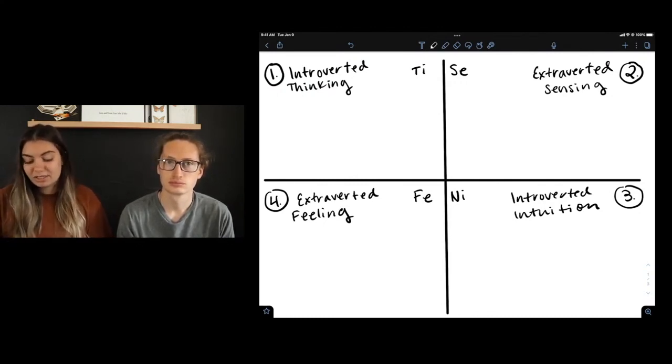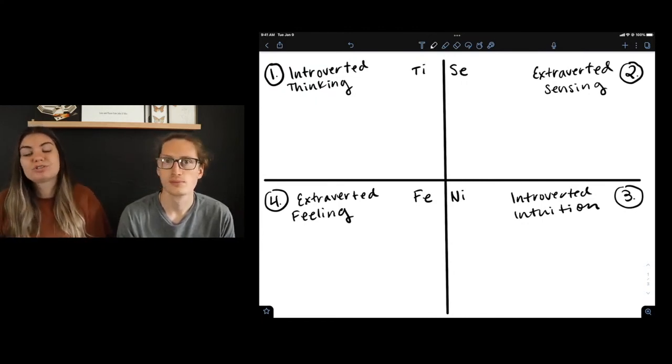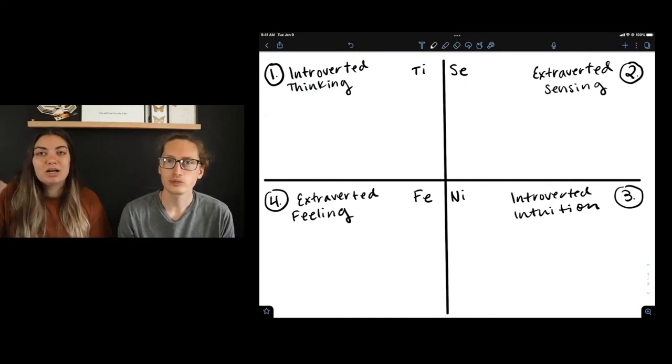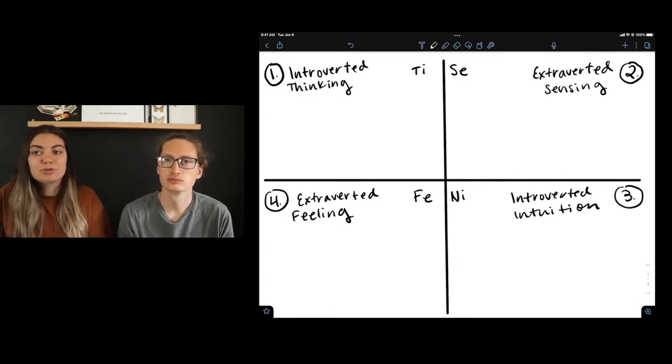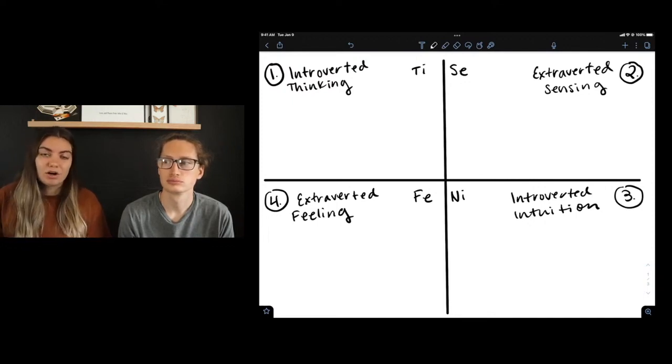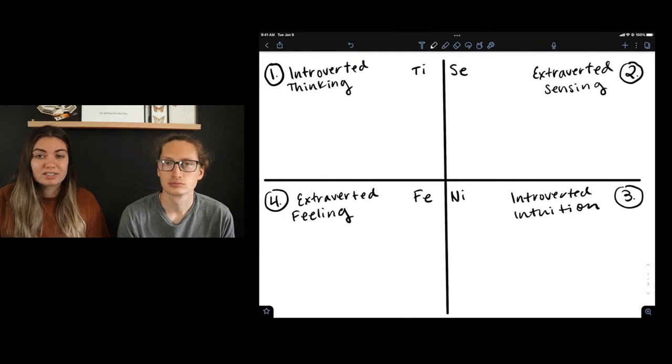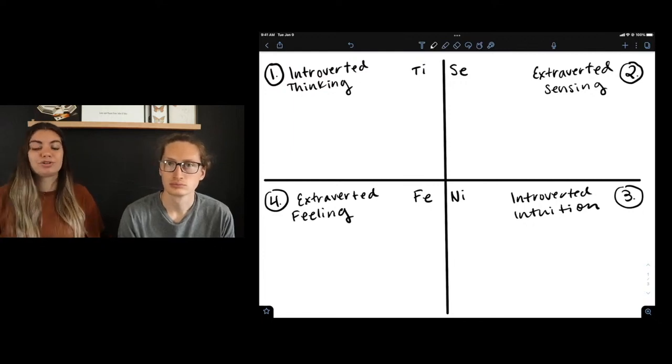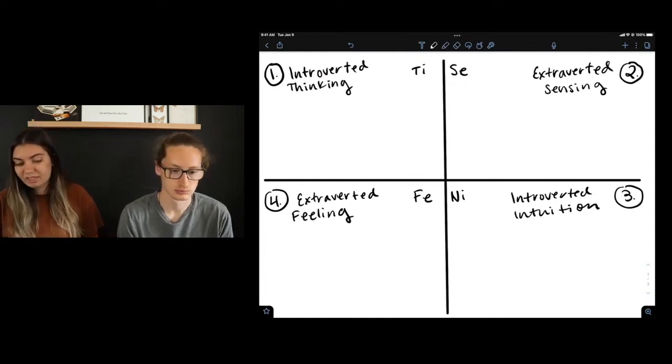So yeah, one thing to note is ISTPs don't have any introverted feeling. In fact, it would be the eighth function if you're using an eight function model. So they're not super sensitive. They're not super focused on their internal feelings, and so if you feel that you are focused on your internal feelings sometimes, I think maybe look into another type that has introverted feeling. Or, and also, if you feel like you're kind of bossy, leadership oriented, you might want to look into like a TJ type as opposed to a TP type, because they have the inner feelings and kind of that external thinking that's kind of bossy.